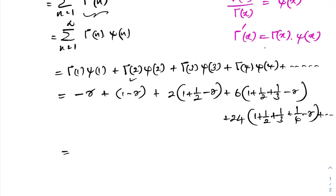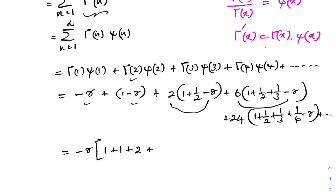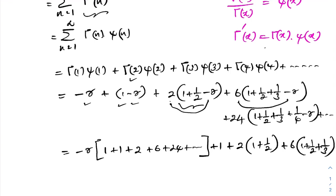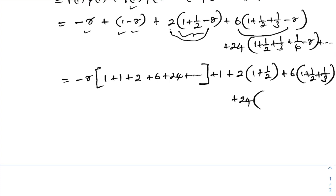Factoring out -γ as a common factor from all terms, we collect the coefficients: 1 + 1 + 2 + 6 + 24 + ... For the remaining parts, we have 1·0 + 1·1 + 2·(1+1/2) + 6·(1+1/2+1/3) + 24·(1+1/2+1/3+1/4) + ...